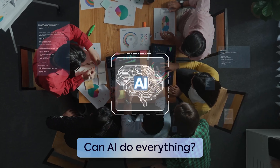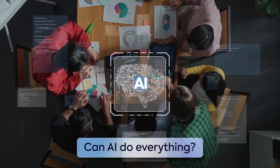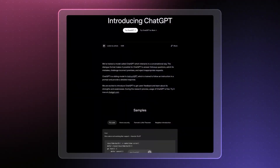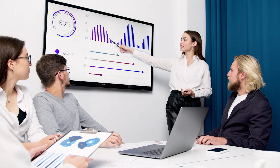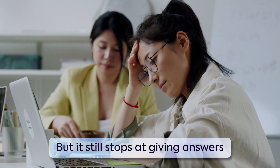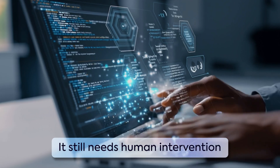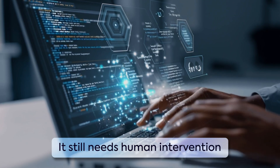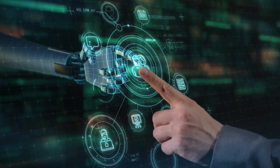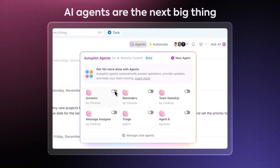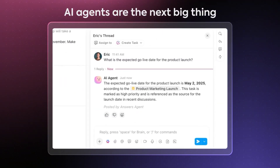Can AI do anything and everything? That's the question on everyone's mind as using AI tools like ChatGPT and Claude becomes the norm. 62% of people surveyed by ClickUp already use conversational AI to generate content, analyze data, and more. Yes, these tools are powerful, but most of them stop at giving you answers. You still need a human in the loop to handle end-to-end workflows, make different tools work together, or process large data sets. And that's why AI agents are becoming the next big thing.